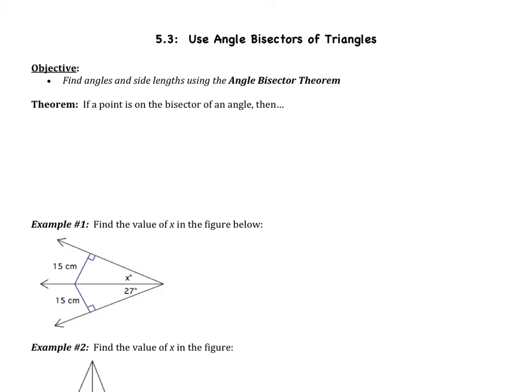We have one objective for today. We're going to find angles and side lengths using the angle bisector theorem. But before I tell you what that theorem is, we should talk about what is an angle bisector. So if you draw yourself a triangle, an angle bisector bisects the angle.